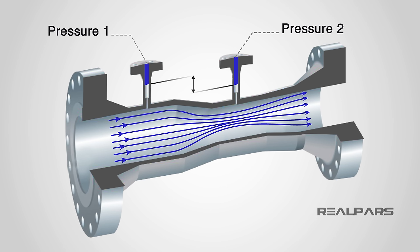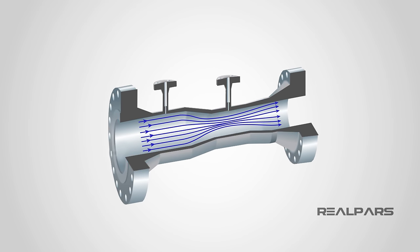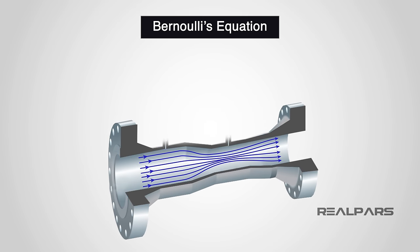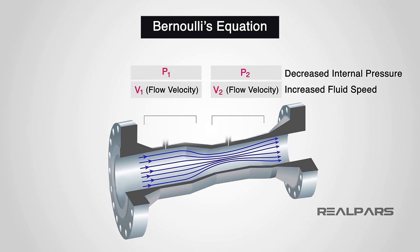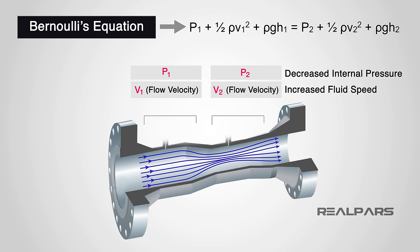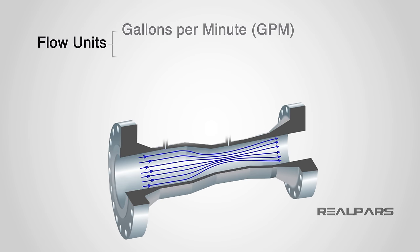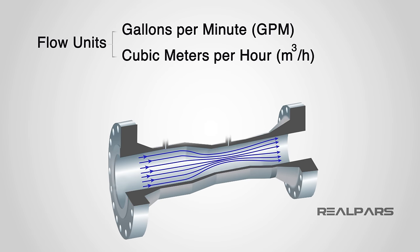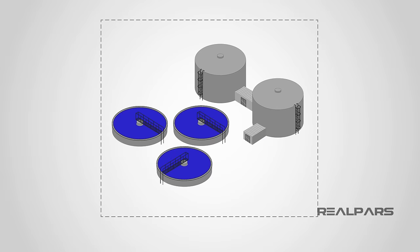The secondary element will measure the difference in pressure created by the primary element. These measurements are sent to the electronics housing where the signal processing is done. By using Bernoulli's equation, which states that the pressure drop across the constriction is proportional to the square of the flow rate, the delta P is then converted into units of flow. These units of flow can be gallons per minute or cubic meters per hour. Using DP transmitters as a method to measure flow works best on fluids that are relatively clean and of low viscosity. Delta P flow transmitters support a small span or range, which is why they are very commonly used in water and wastewater applications.